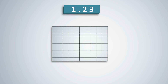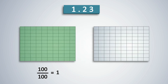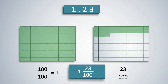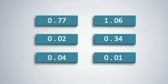What about 1.23? Here, 1 is a whole number. 2 is in the tenths place while 3 is in the hundredths place. 2 tenths and 3 hundredths are the same as 23 hundredths, or 23 upon 100. So we represent it as 1 and 23 upon 100. Give plenty of examples and ask students to solve them for more practice.